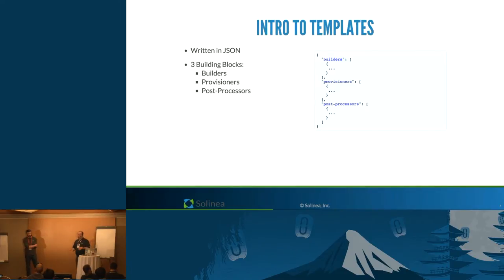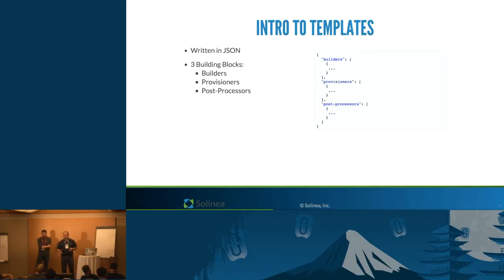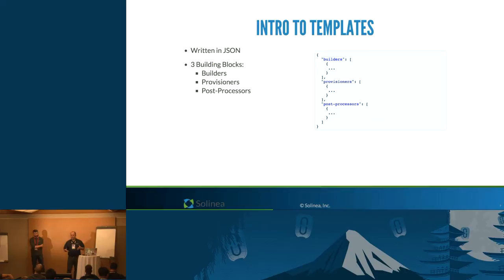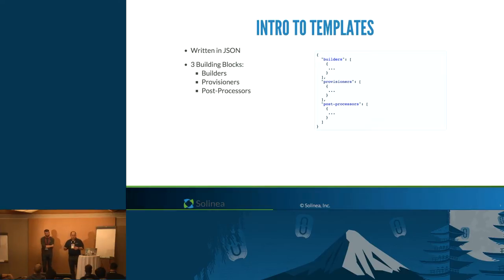A quick intro to templates: they're JSON formatted, very straightforward, and have three major sections — builders, provisioners, and post-processors. It's almost like fill-in-the-blanks. The example today will use Ansible, but you can use just about anything in that location. The post-processor tells you where the image is going to live. With that, Spencer is going to start testing the demo gods and run through everything.